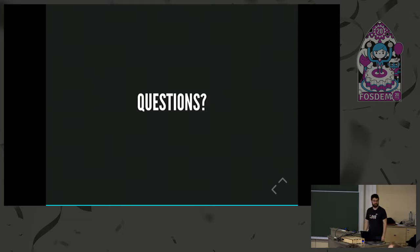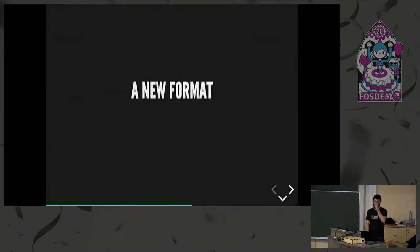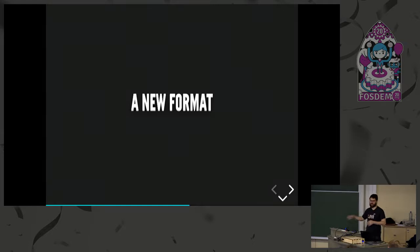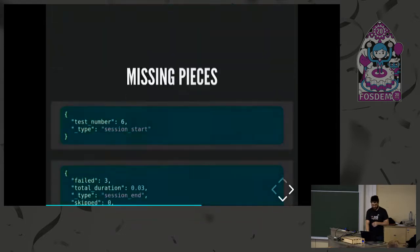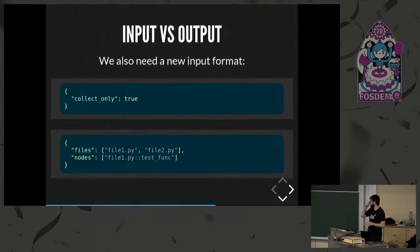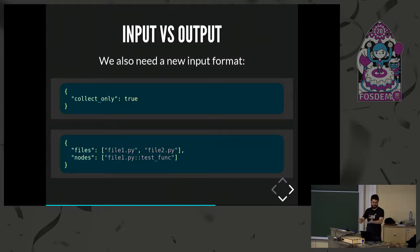Question: you talked about an input format and output format, and Balto was discovering tests as well. How do you do that without a discovery protocol? So in the input format, the first example is Balto sending a 'collect only' message to the plugin, and then the test runner — which already has the code to collect tests without running them — sends back a specific collection message without status, timing, and so on.